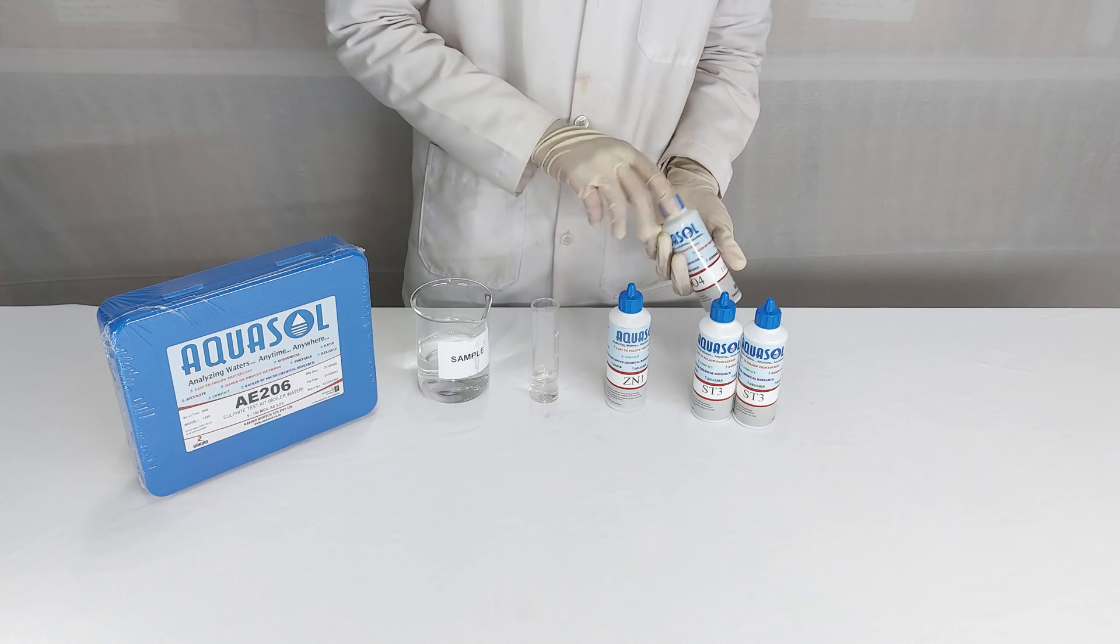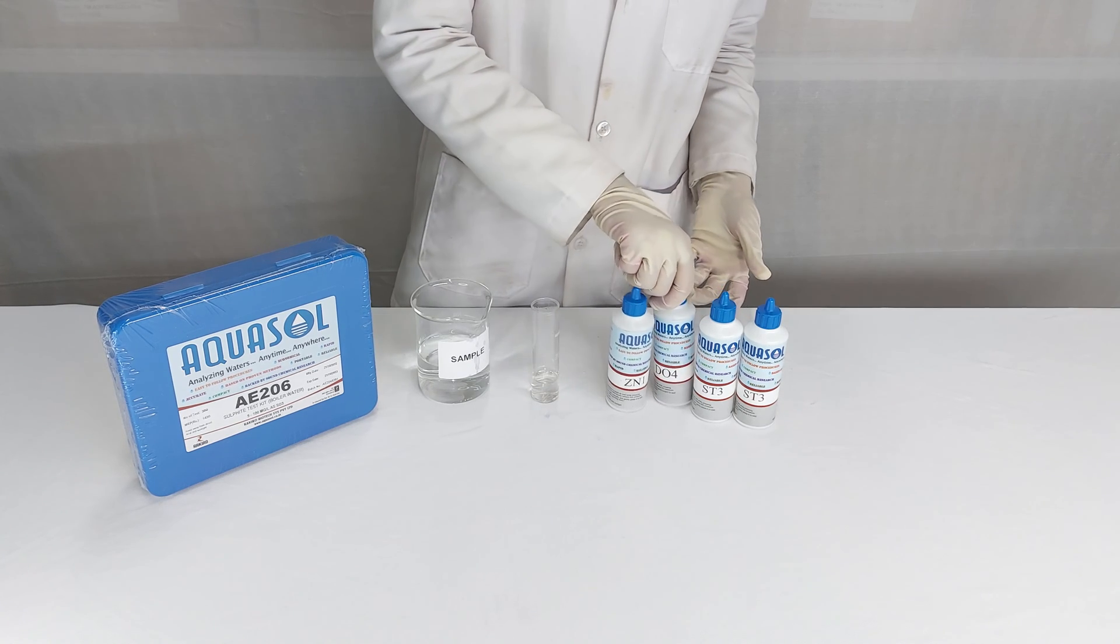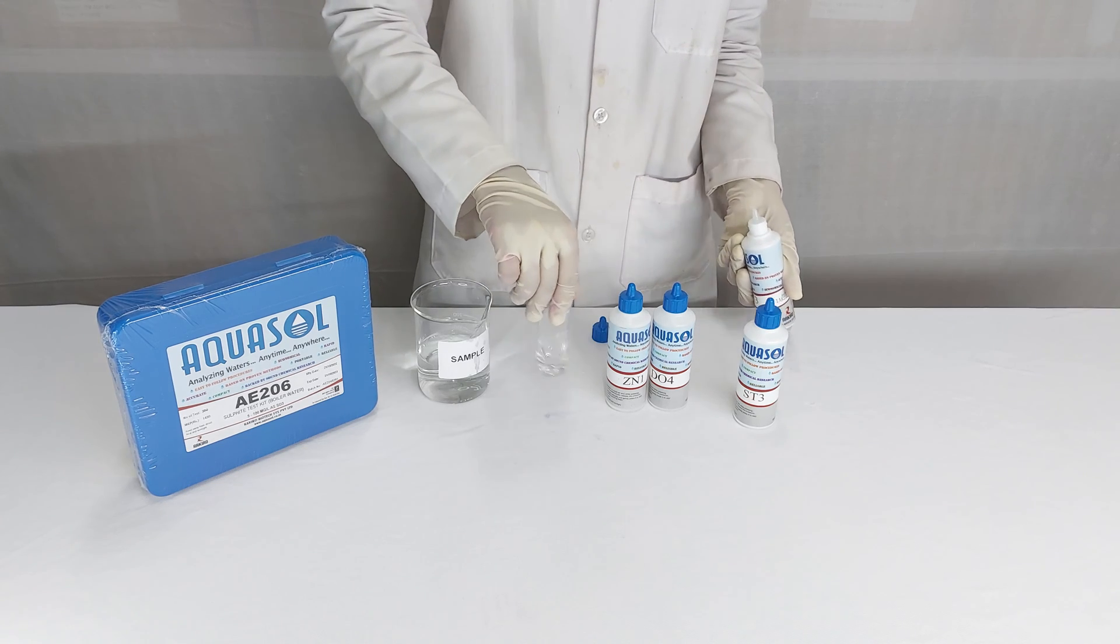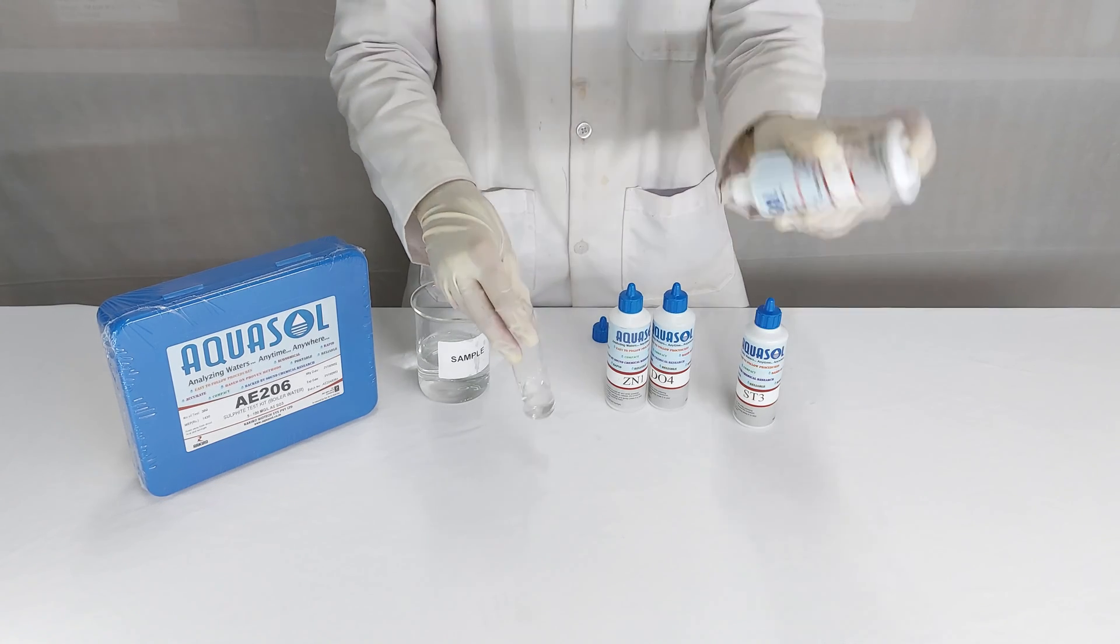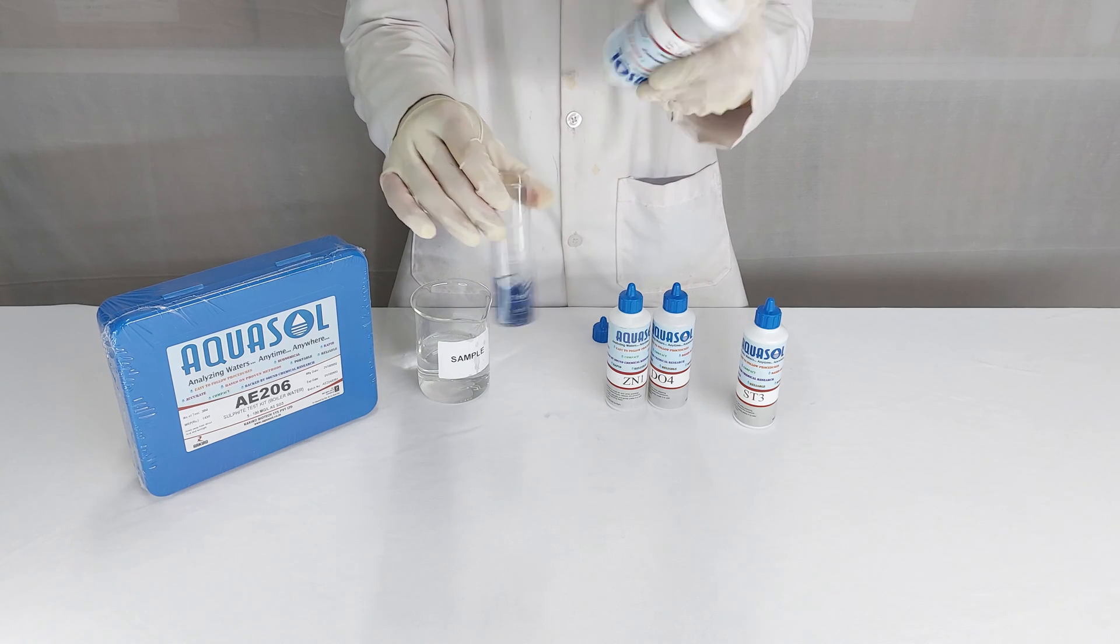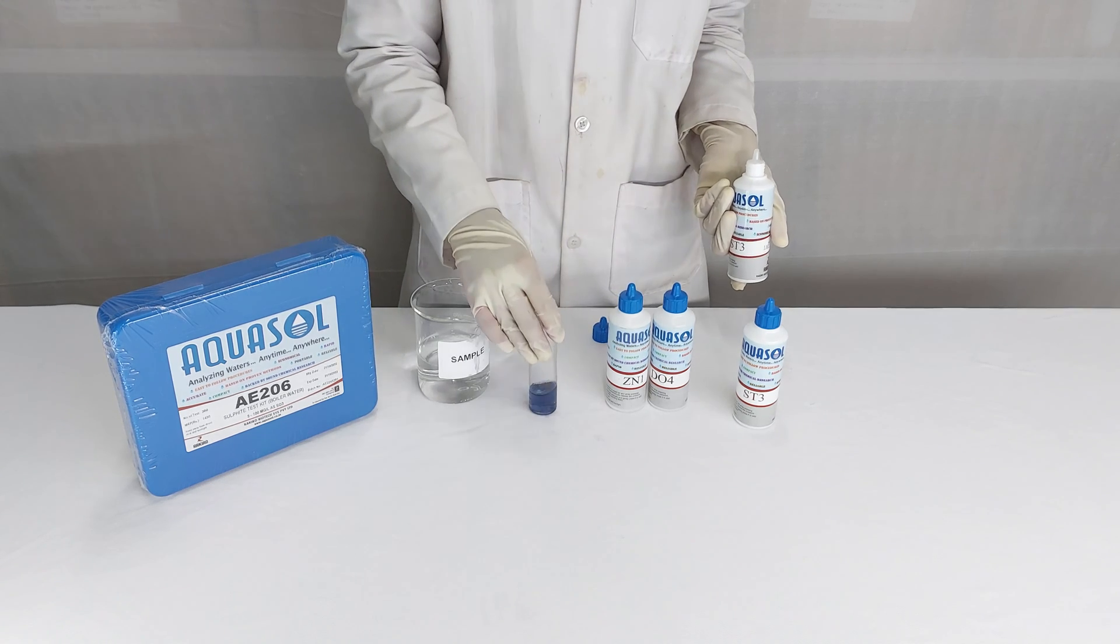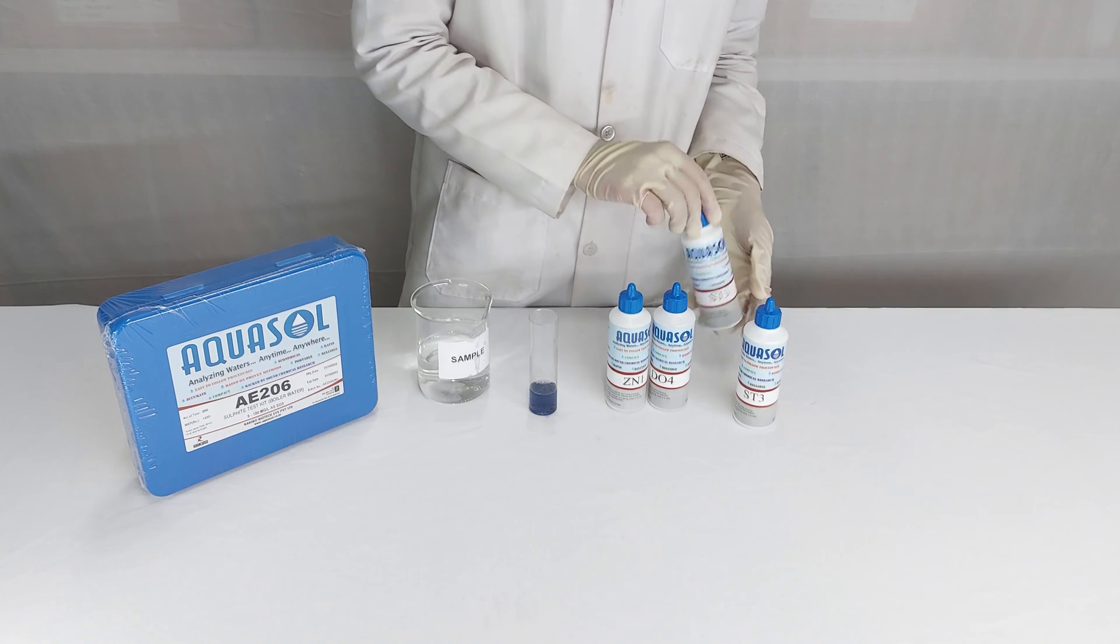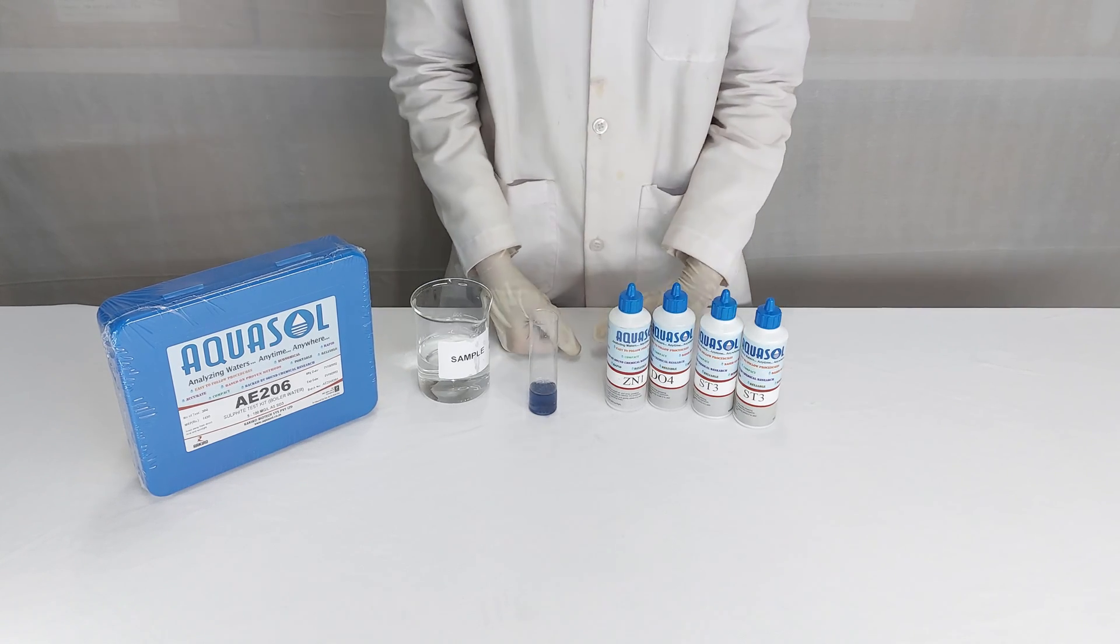To estimate the value of sulphide, add reagent St3 drop by drop, counting the number of drops while mixing until the color changes from colorless to blue. The number of drops of St3 reagent multiplied by 5 gives the sulphide concentration of the sample.